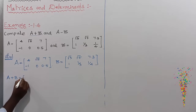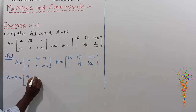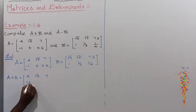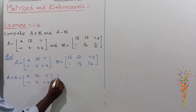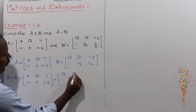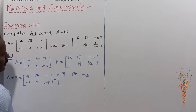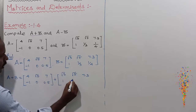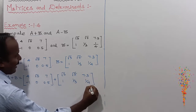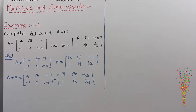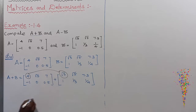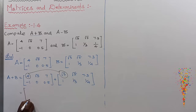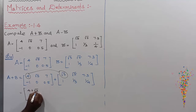For A plus B, the A matrix is [[4, √5, 7], [-1, 0, 0.5]] plus [[√3, √5, 7.3], [1, 1/3, 1/4]]. The corresponding values are added. The first row, first column: 4 plus √3.